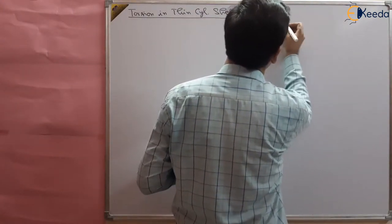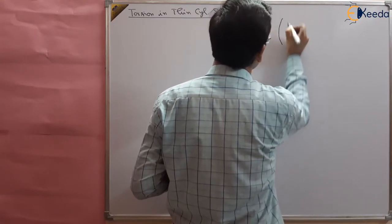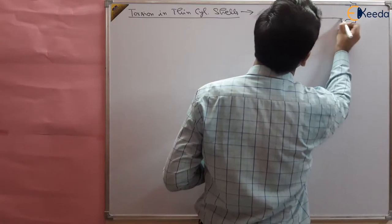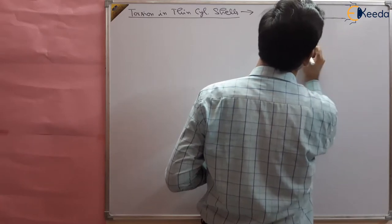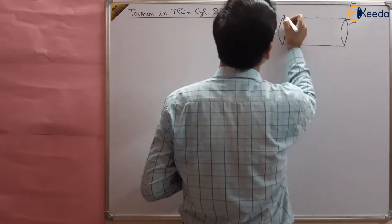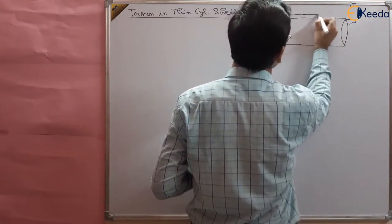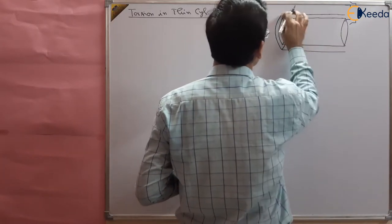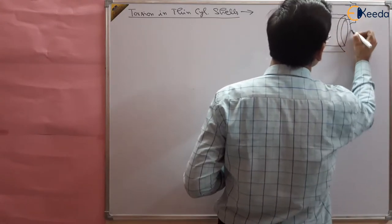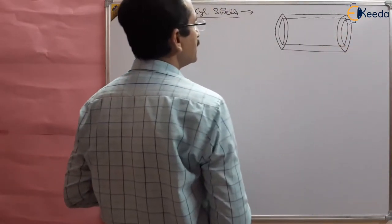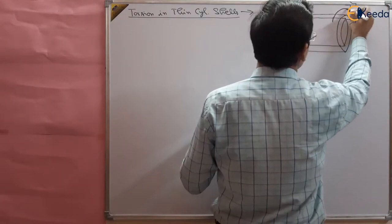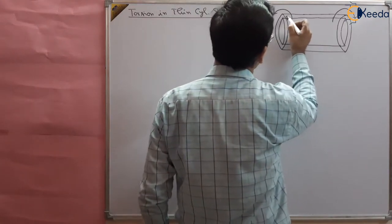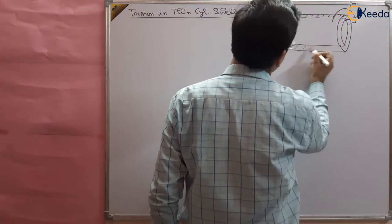Suppose this is a thin cylindrical shell — we are showing here this shell like this, and we have applied a torque to this thin cylindrical shell. This shell has some thickness. So apart from the internal pressure, we have applied a torque to it. The torque is applied and we want to find out what are the stresses, what is the stress condition in this case when we are applying this torque.